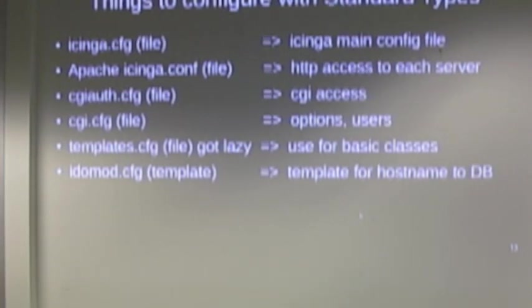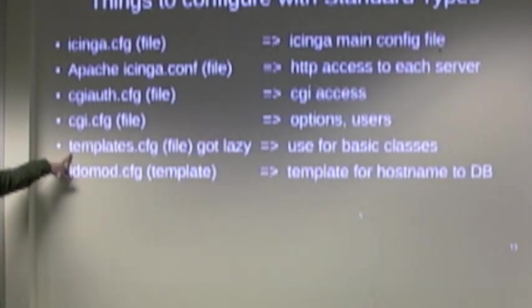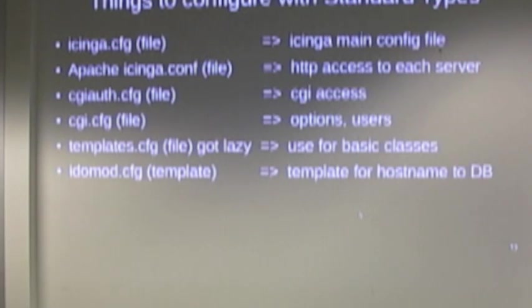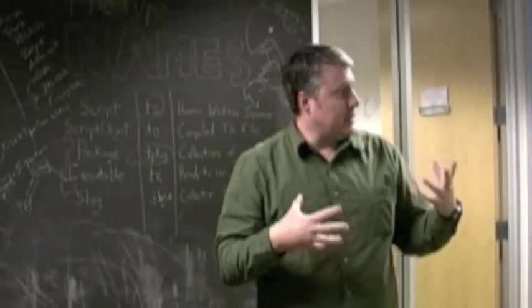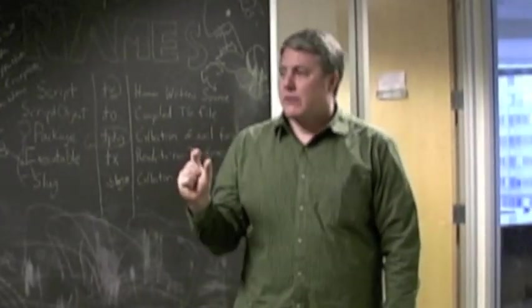Things that I can figure with a standard type. Just straight files. Because these don't change very often. And they're, like, obscenely complicated. The basic Echinga CFG file, which is the main file. Apache needs to run on the box so that we can view it locally if we need to. CGIO auth is who has access to what. For example, Tyron, we give access to some things. And then the ops team has access to everything. And then the sales guy actually has access to the all-time reports. Templates. You can use the built-in Najos process. I don't, I got lazy. And then the ideal mod is a template because each backend reports to the database as to who it is. So, you know, I'm on three and I say this. And I'm on two and I say this. So that, you need to use a template. And then you just replace the host name with the factor fact. And you're all good to go.